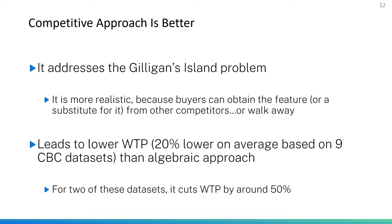This competitive simulation approach with a rich set of competitors addresses the Gilligan's Island problem. It's more realistic because buyers can obtain this enhanced feature from you or potentially from competitors offering the same enhancement or substitutes. Our experience, having looked at nine different choice-based conjoint data sets, is that it leads to willingness to pay about 20% on average lower than the other two approaches. For two of the data sets, it cuts the willingness to pay by a full half.